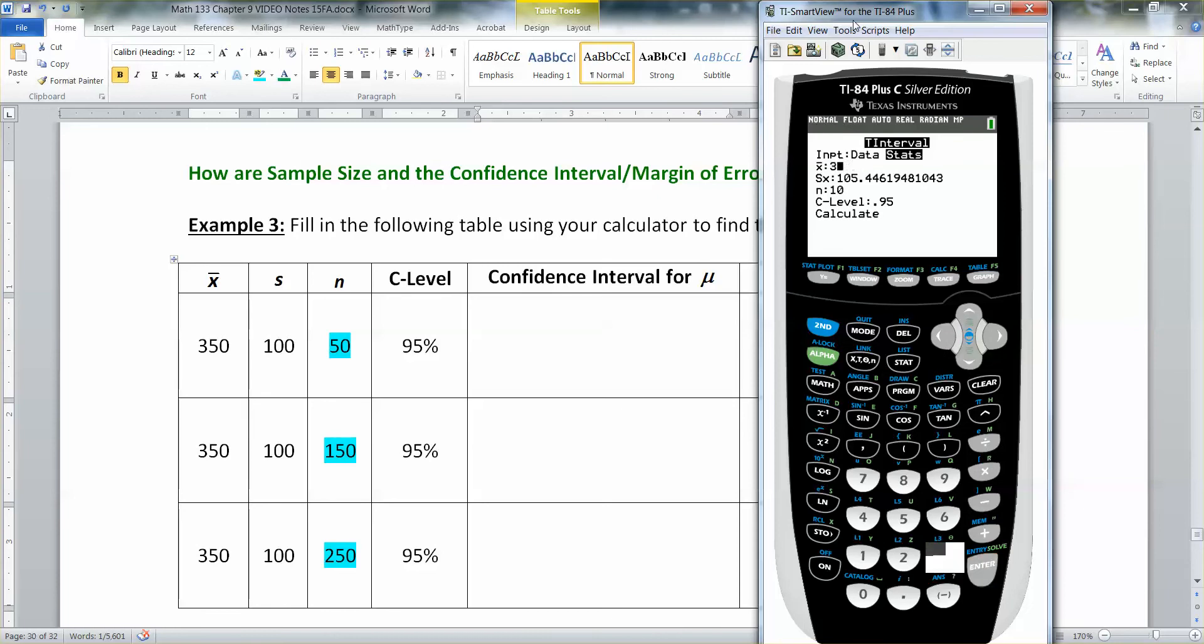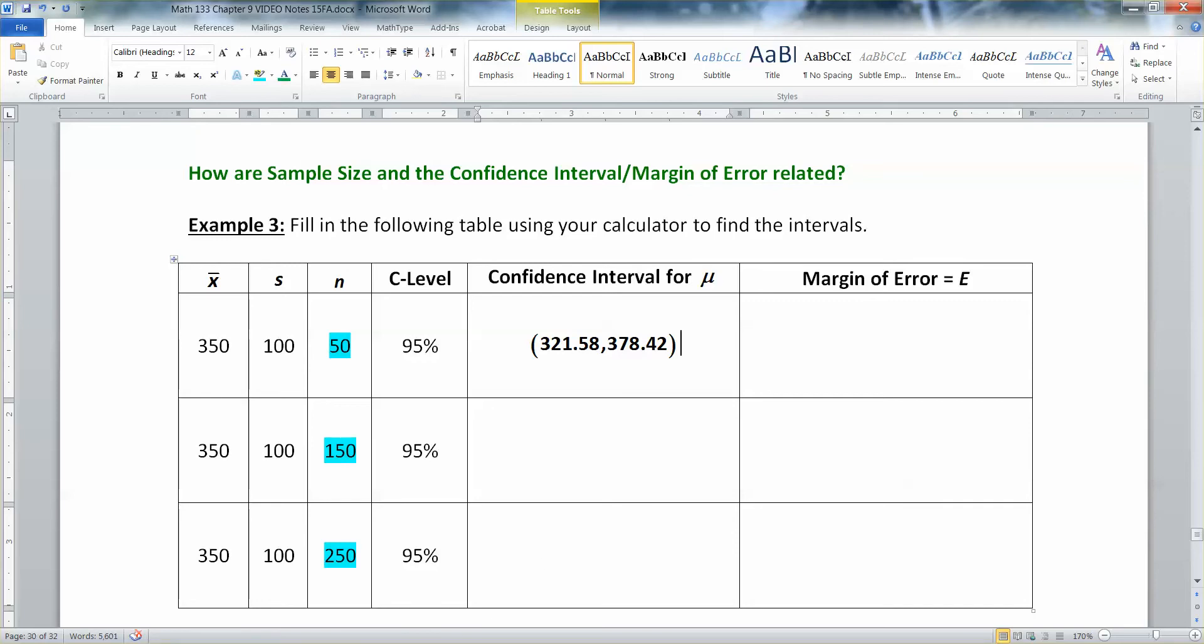Alright, so our X bar is 350. Our S is 100. And our N is 50. And then I'm going to leave the confidence level at .95 and press enter. And I get a confidence interval of 321.58 and 378.42. So I type those values in right here.